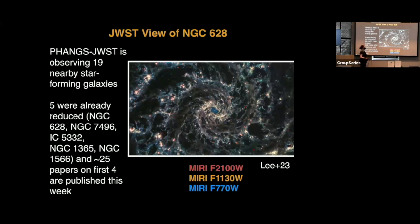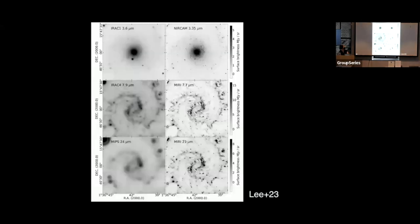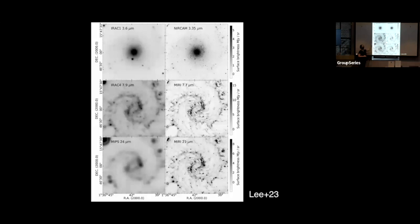This is one image of a particular galaxy — NGC 628, the Phantom Galaxy. This is another image from Janice's paper showing the comparison of Spitzer data versus JWST, where you can see the improvement in the data. You obviously see a lot more blobs on the right compared to the left — we have an order of magnitude better spatial resolution, and an order of magnitude better sensitivity, giving us capabilities for science that we didn't have before.